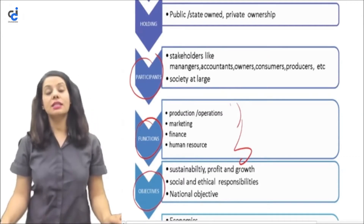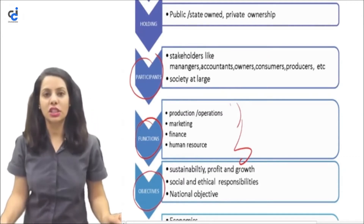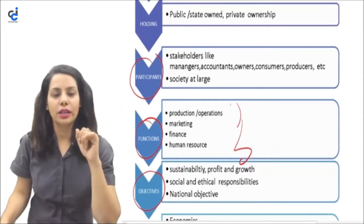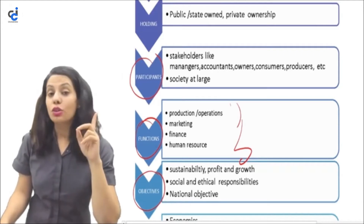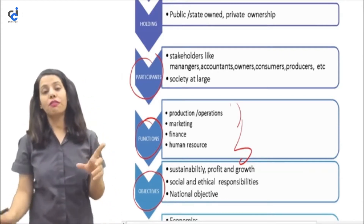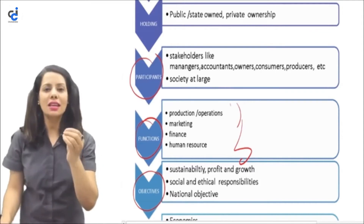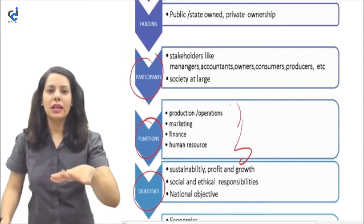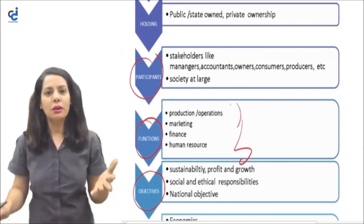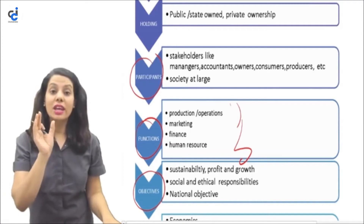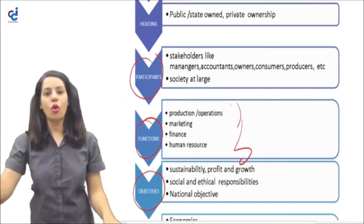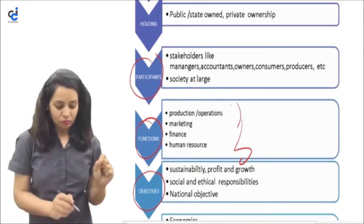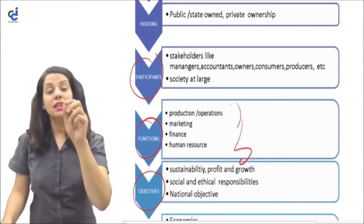What are the main objectives of any business activity? First, profitability — profit is very important. Second, sustainability — a business must not close down after a short time; it has to last for a longer period. Third is growth — profitability, sustainability, and growth together form the main objectives.